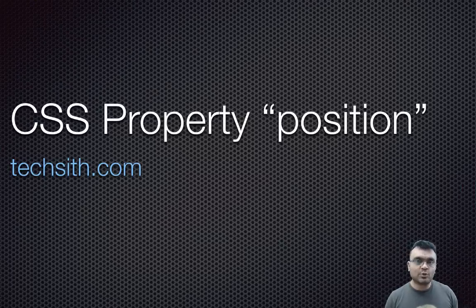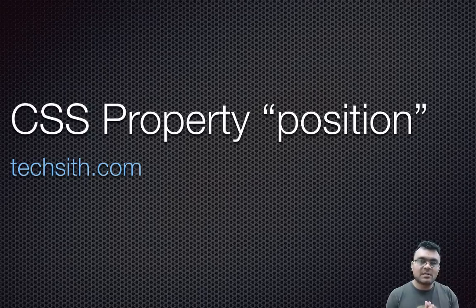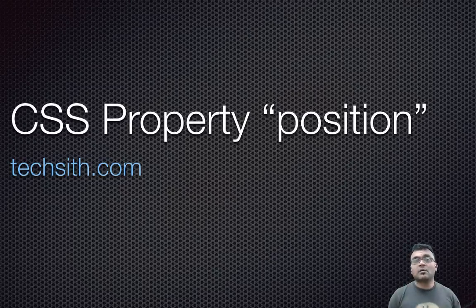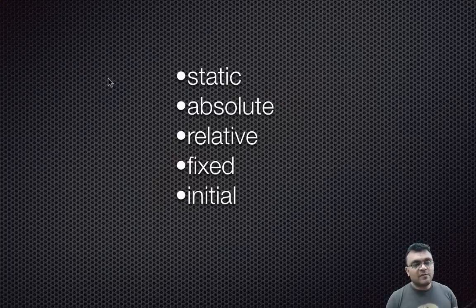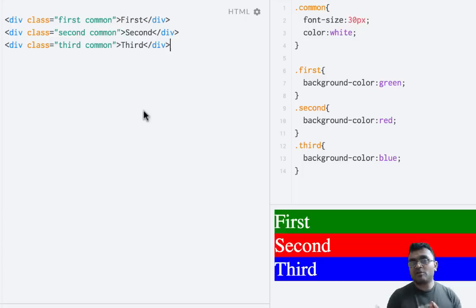Hi and welcome to Textit Tutorials. Today we are going to learn about one of the most important properties in CSS called position. We will take a look at a simple example to demonstrate how different values of the position property work, and for each value I'm going to show a practical example of where to use them. The commonly used property values are: static, absolute, relative, fixed, and initial.